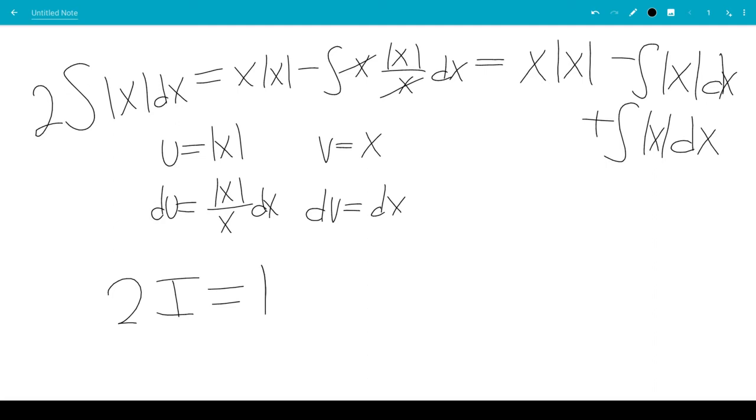which is x times absolute value of x, which means we have I equals x times absolute value of x over 2 plus c.